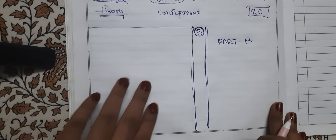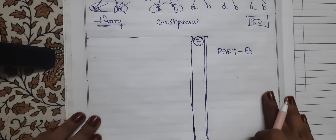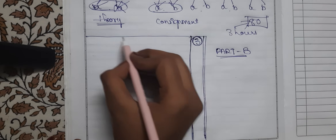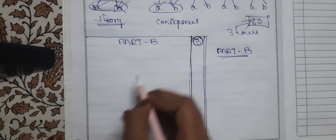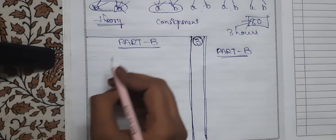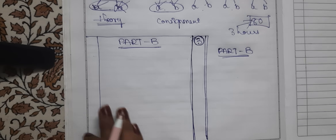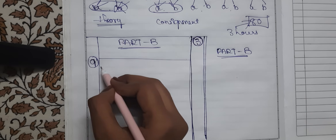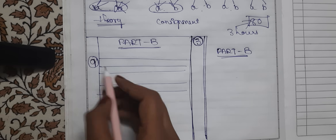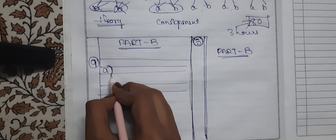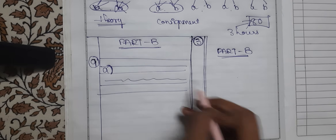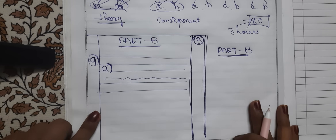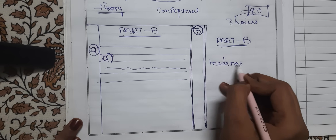I suggest you attempt Part B first — 30 minutes is enough for Part A, but Part B requires more time. The total duration is 3 hours for the 80-mark paper. Write 'PART B' as a heading in capital letters, then write the question number, for example 'nine,' followed by 'A' or 'B' depending on which option you are attempting. Then start writing the answer on that line itself.